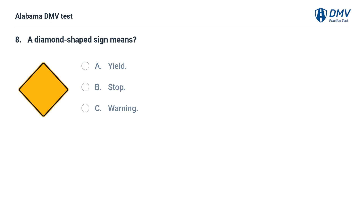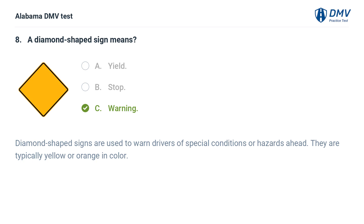A diamond-shaped sign means: A. Yield. B. Stop. C. Warning. Correct answer: C. Diamond-shaped signs are used to warn drivers of special conditions or hazards ahead. They are typically yellow or orange in color.